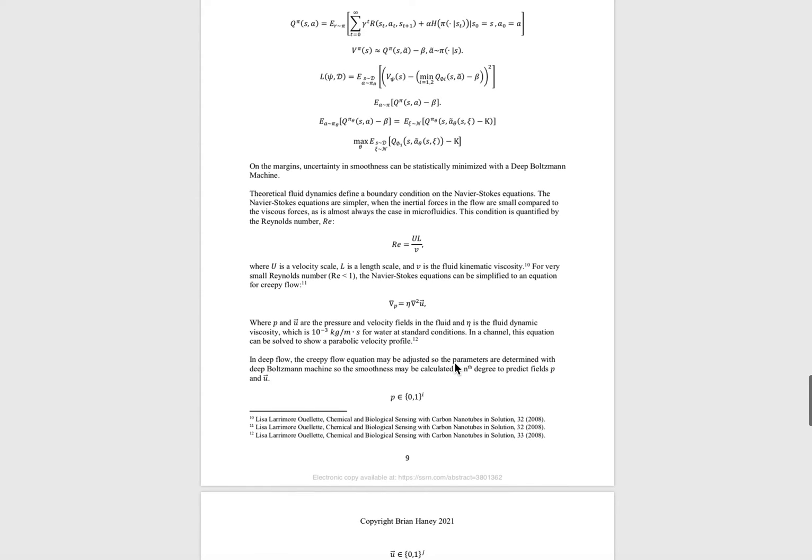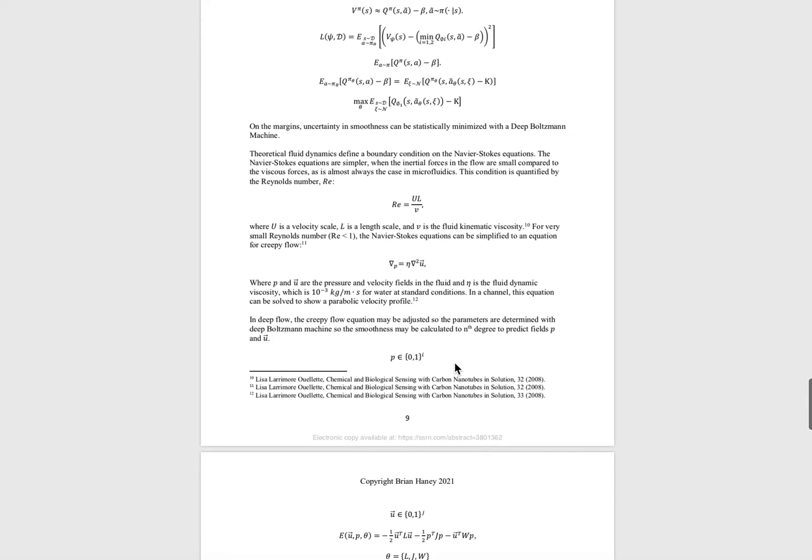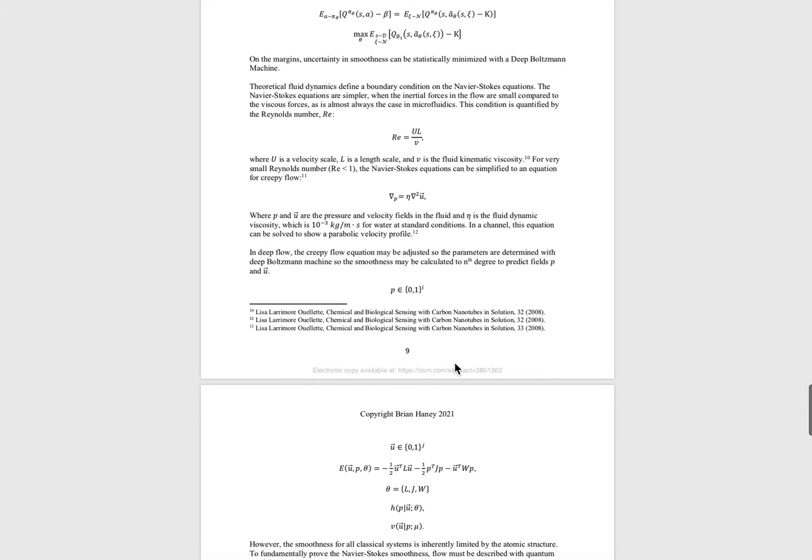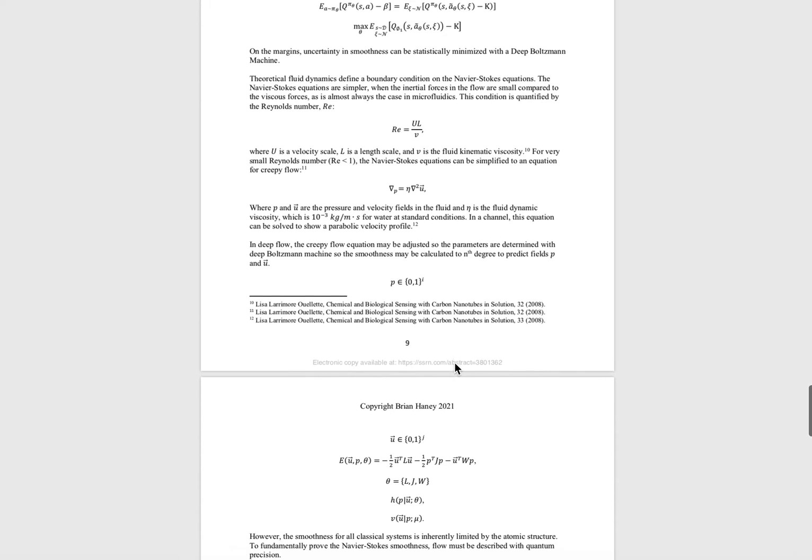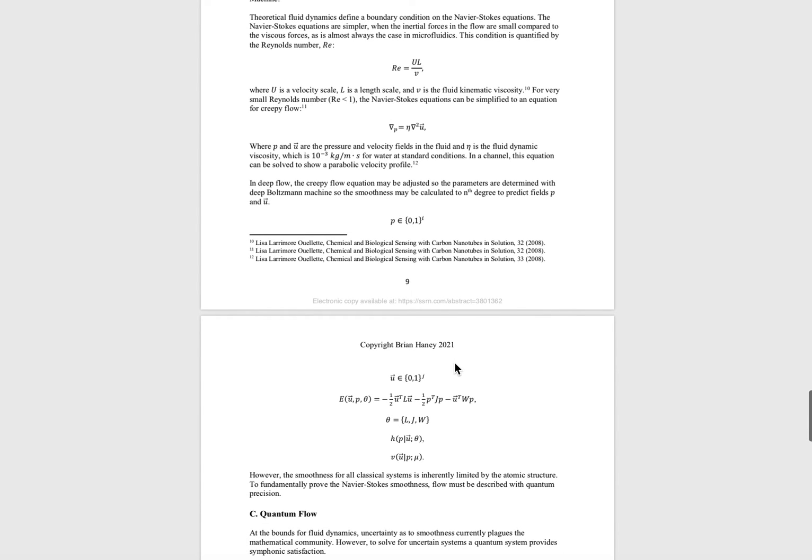I integrated a deep Boltzmann machine within her system. We were able to statistically predict the edges for any classical system with deep learning, modeled as either a wave function or particle. This may be the solution to Navier-Stokes smoothness, but it's still a probabilistic wave function. If we're going to fundamentally prove flow is smooth, then we need a quantum system.